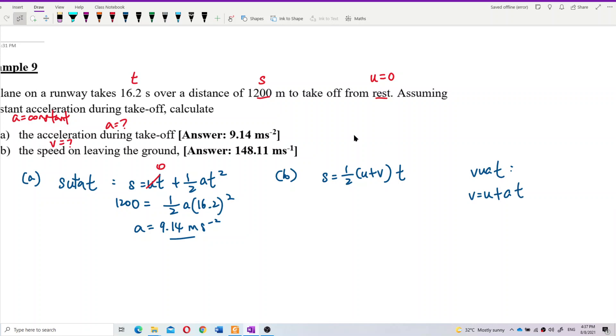Either way, we will get the same answer. Let us try out both equations. We have the displacement, 1,200. Initial velocity starts from rest. Find the final velocity after 16.2 seconds. The final velocity is 148.15 meter per second.